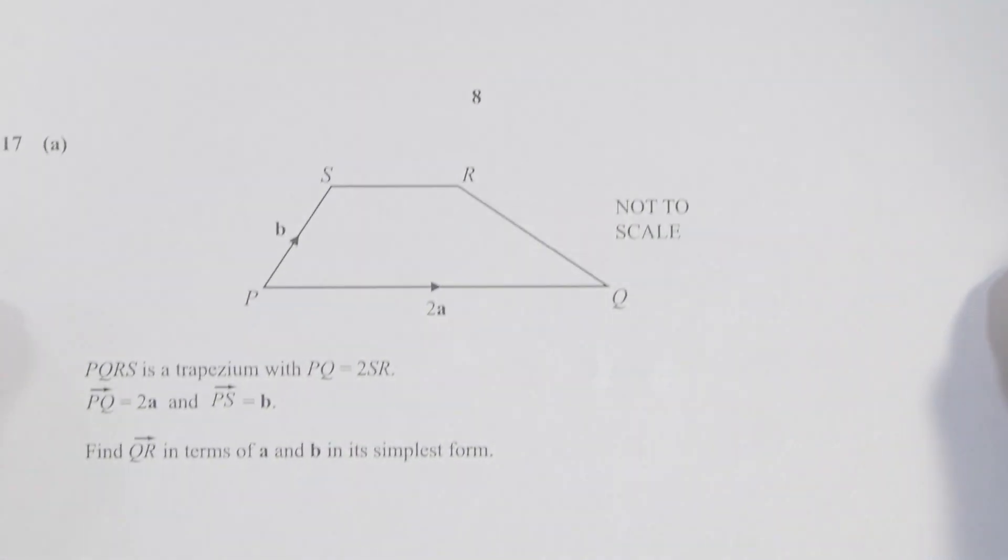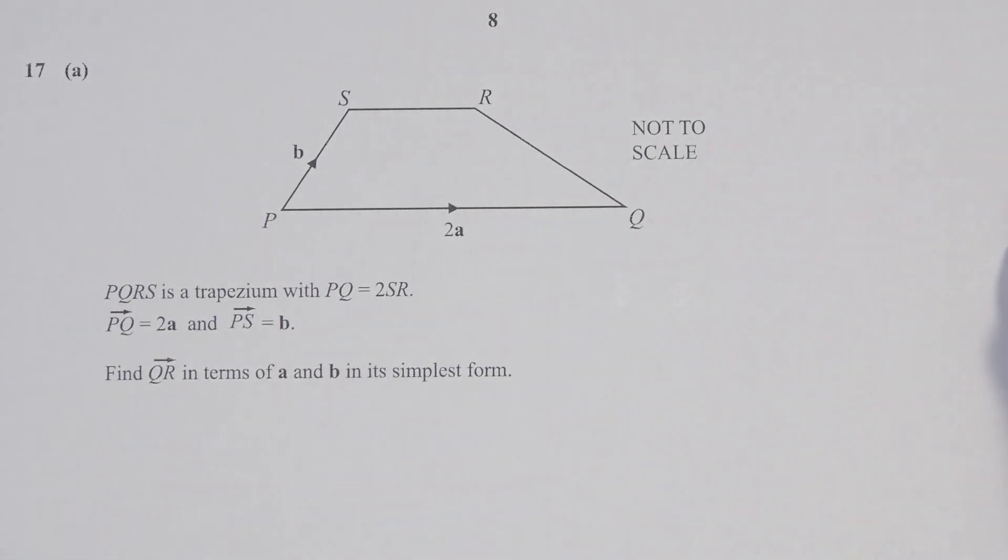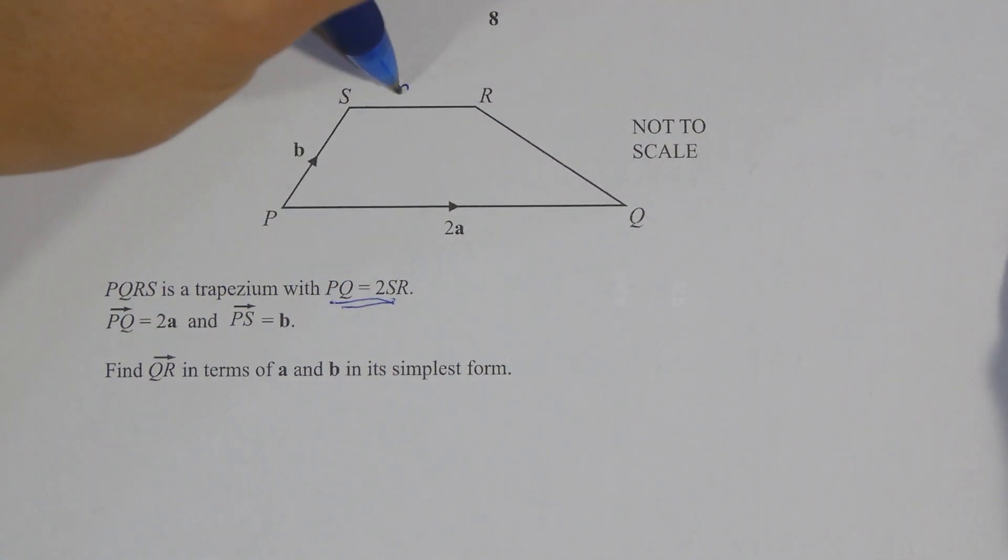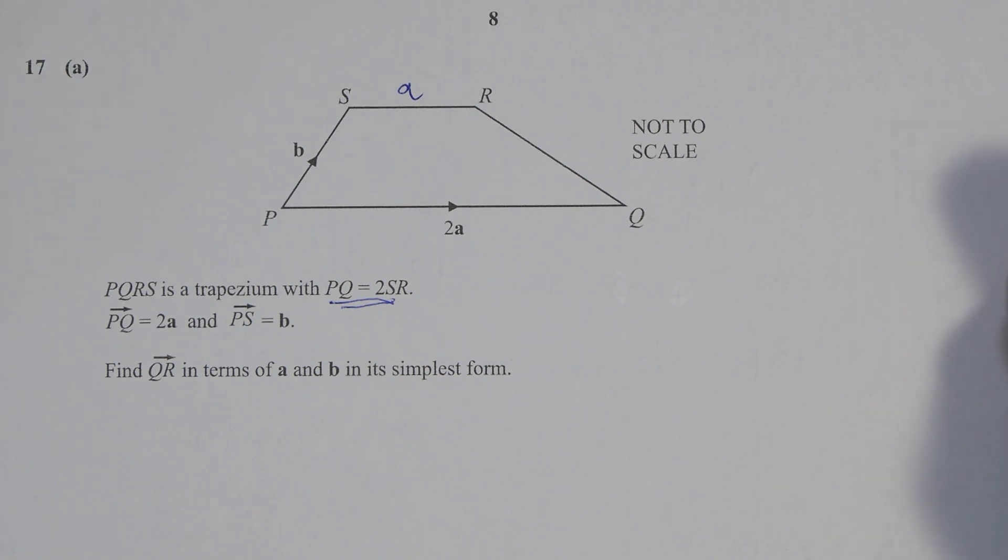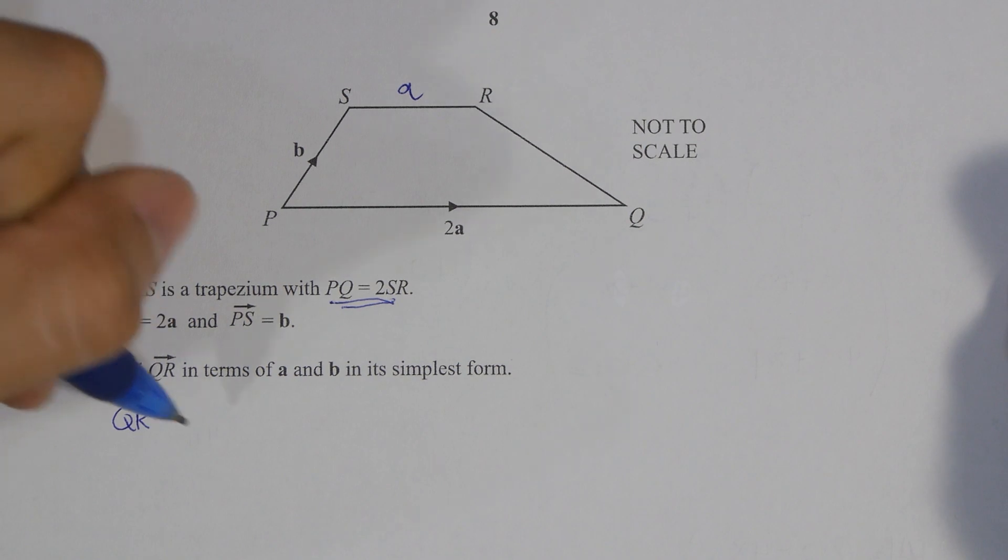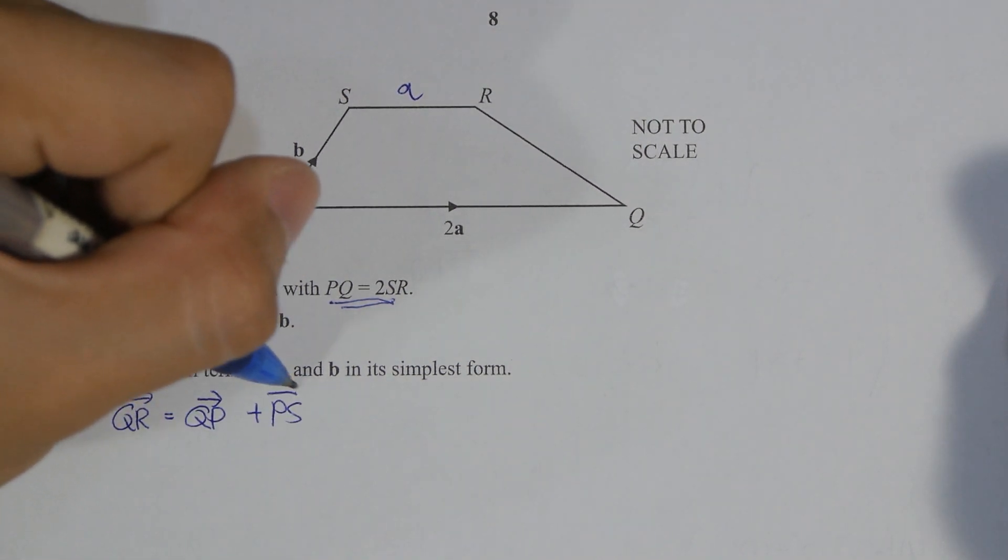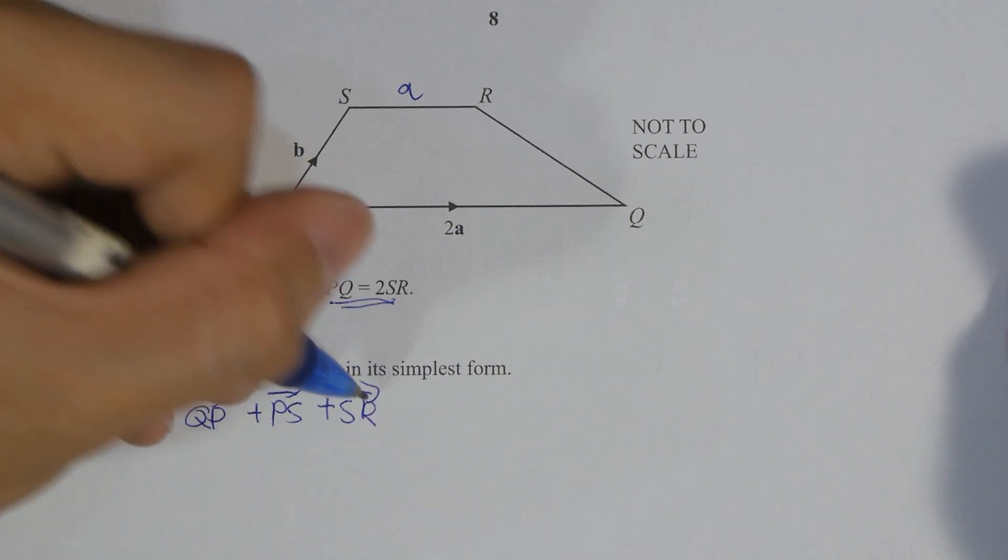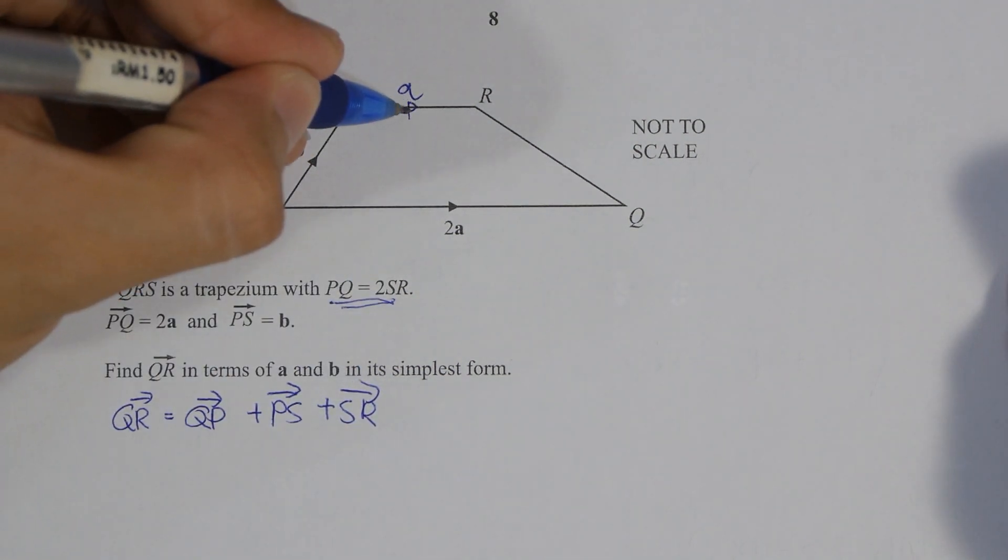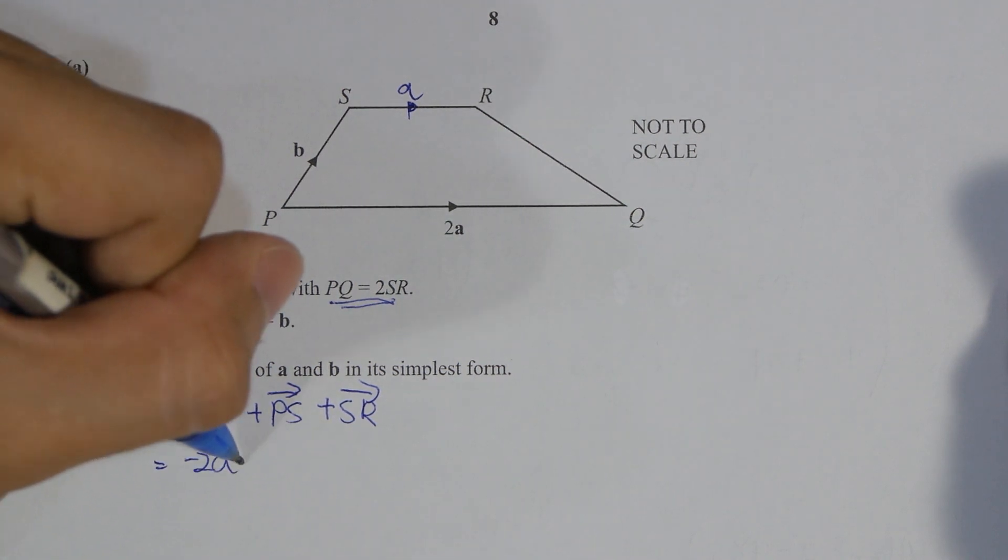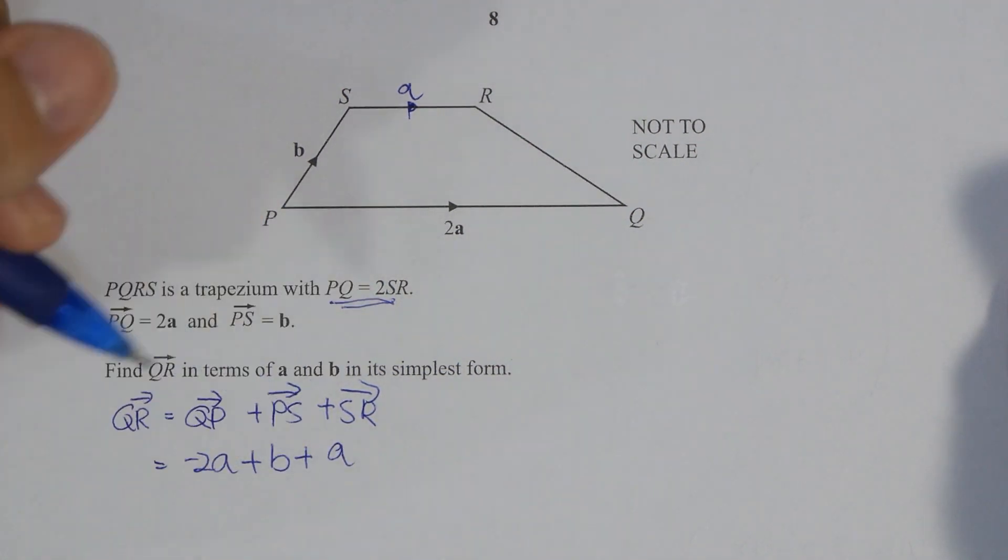This is actually vector. Express QR. So QR is actually QP plus PS plus SR. The keyword here is that PQ is 2a and then PS is b and also the last variable PQ equals to 2 SR. So SR value is actually a. Negative 2a plus b plus a equals to b minus a as the final answer.